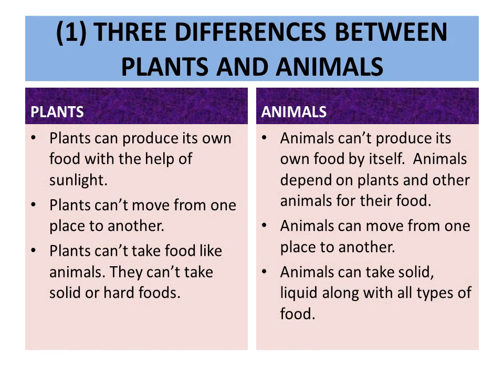Number 1: Three differences between plants and animals. First of all, plants. Plants can produce their own food with the help of sunlight. Animals can't produce their own food by themselves. Animals depend on plants and other animals for their food.